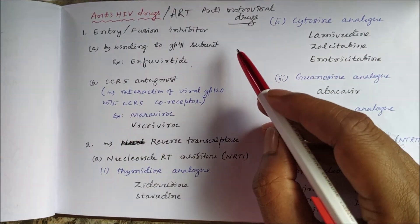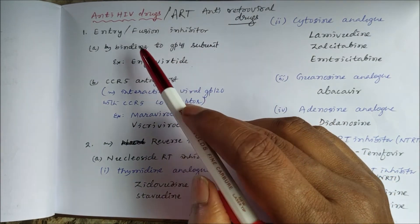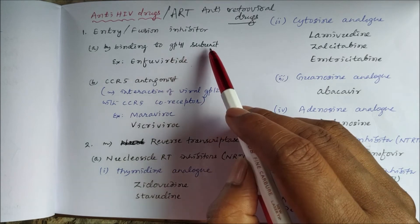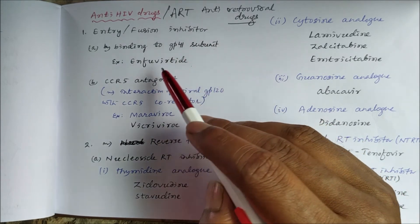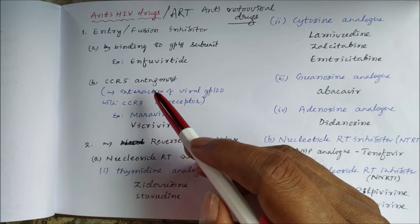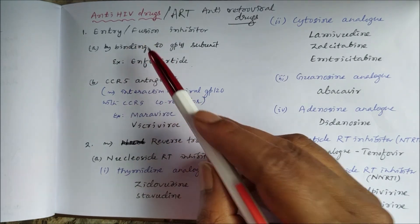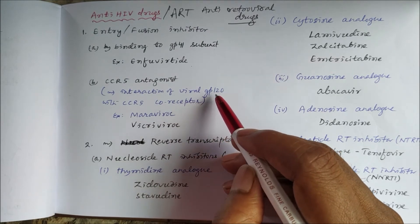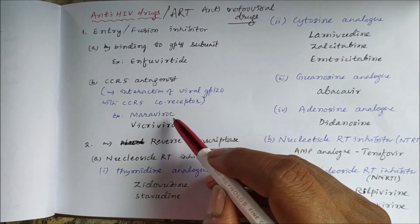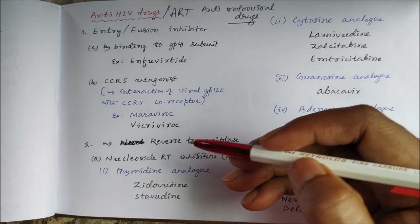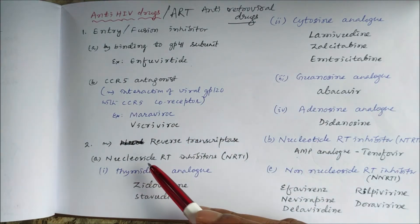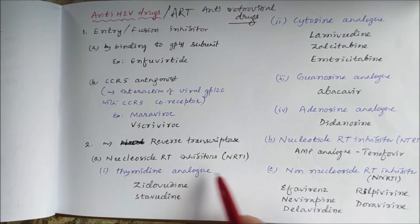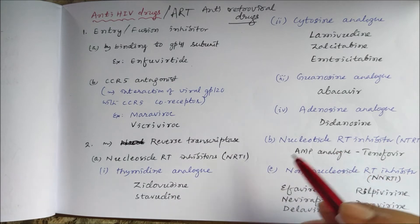Entry or fusion inhibitors bind to the gp41 subunit — for example, enfuvirtide. CCR5 antagonists inhibit the interaction of viral gp120 with the CCR5 co-receptor — for example, maraviroc. Drugs inhibiting reverse transcriptase can be nucleosides, nucleotides, or non-nucleosides. Nucleoside analogues include thymidine analogues, cytosine analogues, guanosine analogues, and adenosine analogues.